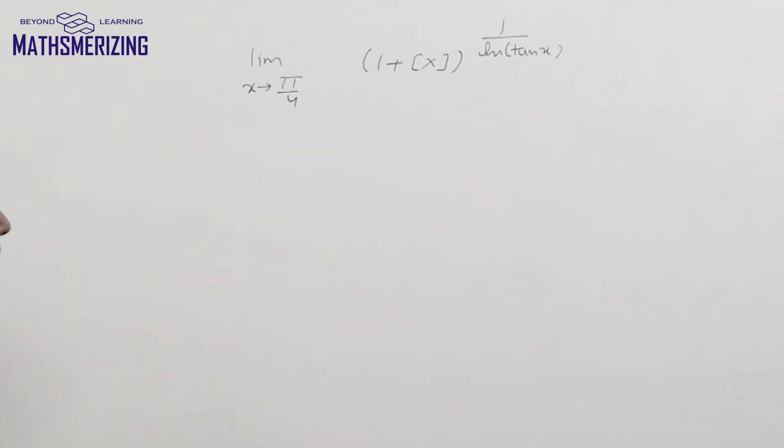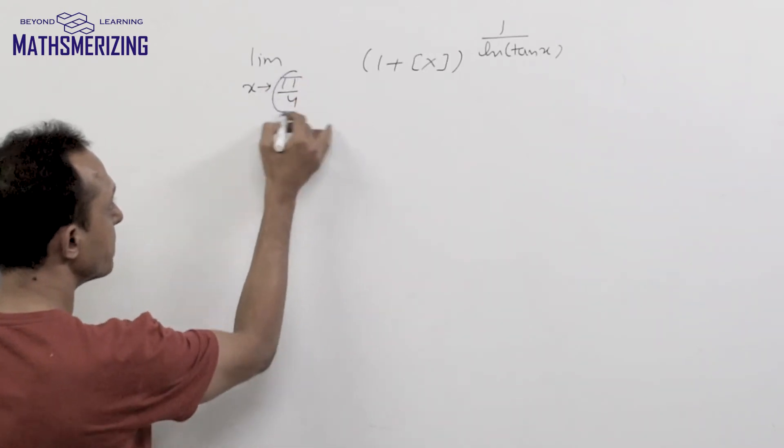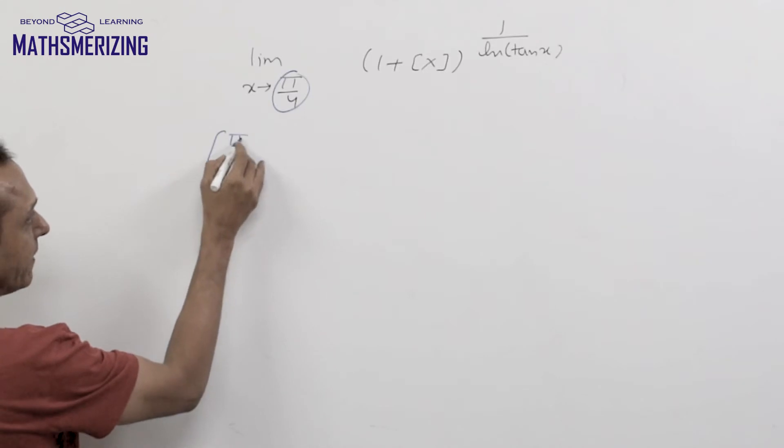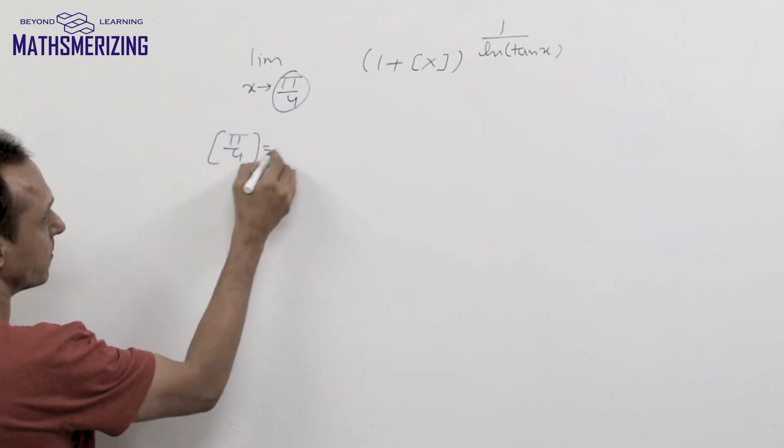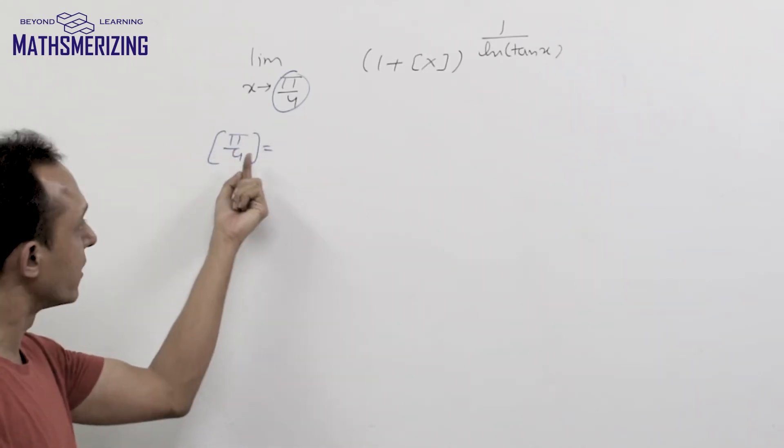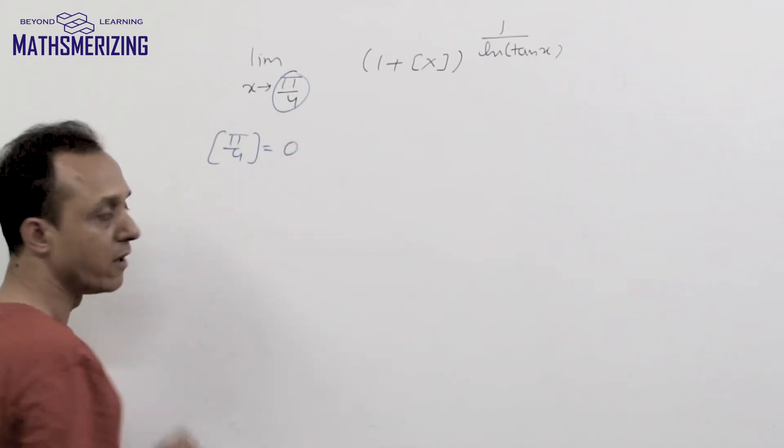Now look at this question closely. When I say this is pi by 4, the greatest integer function of pi by 4... pi is 3.14 divided by 4, so there will be less than 1, so this value will be 0.